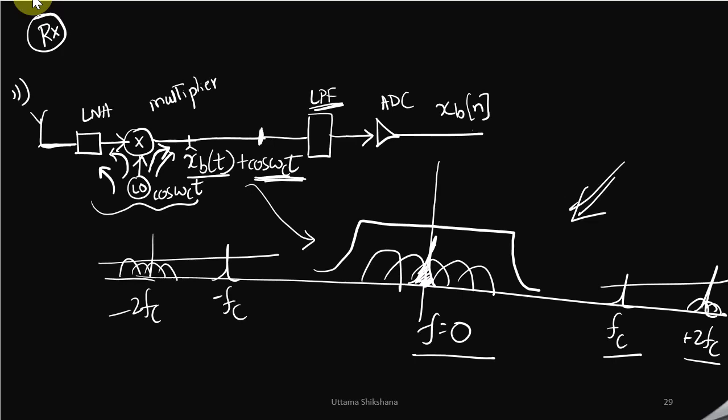And at fc you will see the high frequency component as we had seen in earlier videos. At the baseband as well, we had the baseband signal along with the unwanted DC. This is the low pass filter. Once we pass this particular spectrum to the low pass filter, all these high frequency components will be filtered out. So even if there is a leakage here, we don't need to worry because the low pass filter will take care of it.